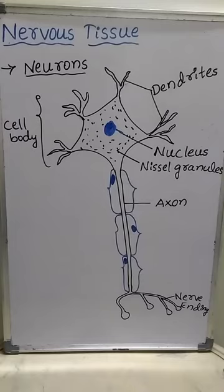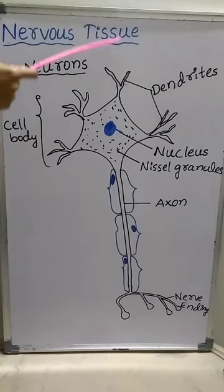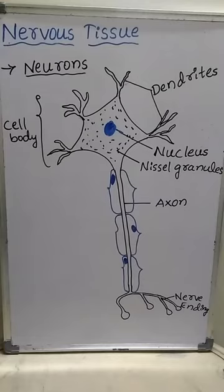Individual cells of the nervous tissue are called neurons or nerve cells. Neurons are the structural and functional unit of the nervous system.